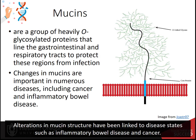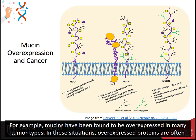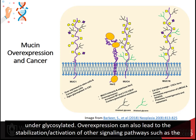Alterations in mucin structure have been linked to disease states such as inflammatory bowel disease and cancer. For example, mucins have been found to be overexpressed in many tumor types. In these situations, overexpressed proteins are often under-glycosylated.